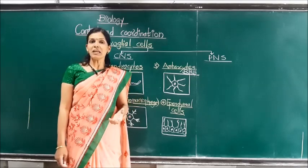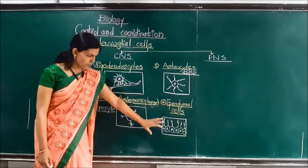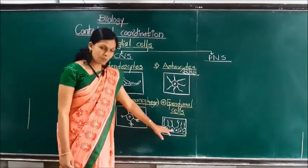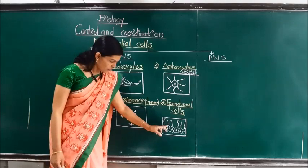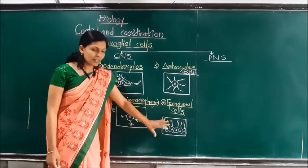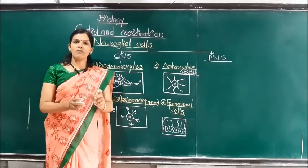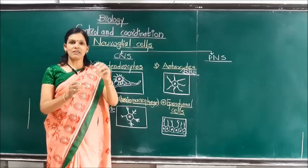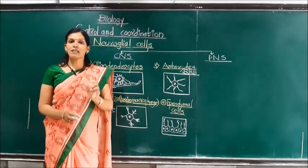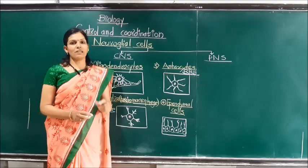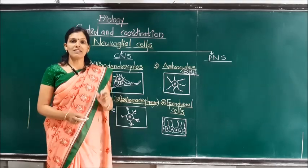Next we will focus on ependymal cells. Ependymal cells are columnar or ciliated epithelial cells with cilia-like branches. These ependymal cells are present in the ventricles of the brain — that is, the cavities of the brain filled with fluid — as well as in the central canal of the spinal cord. Ependymal cells secrete a very important liquid called CSF.